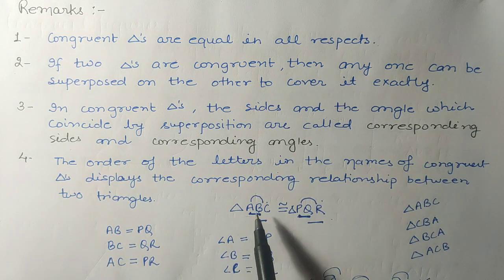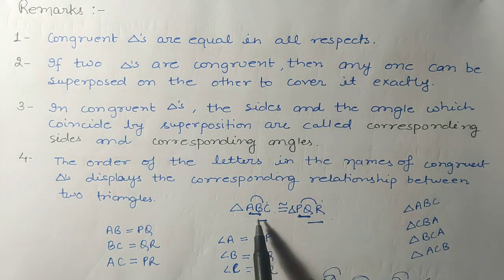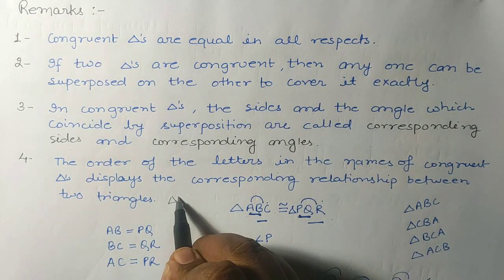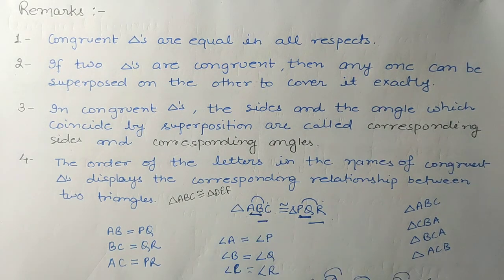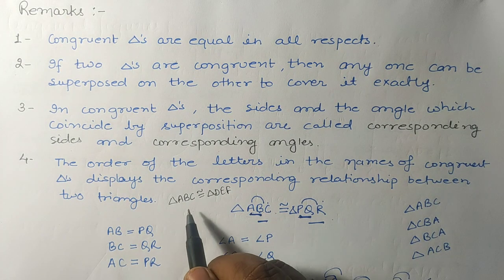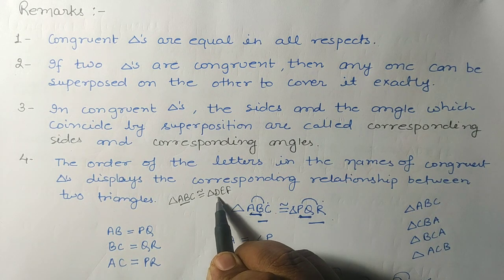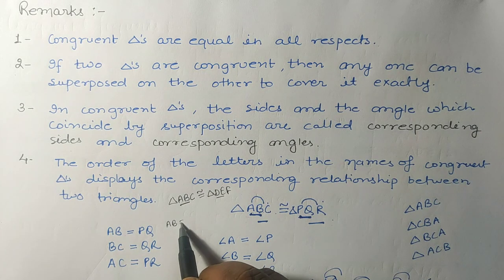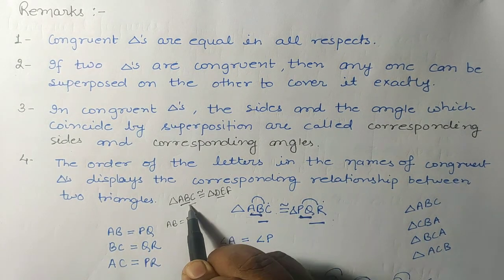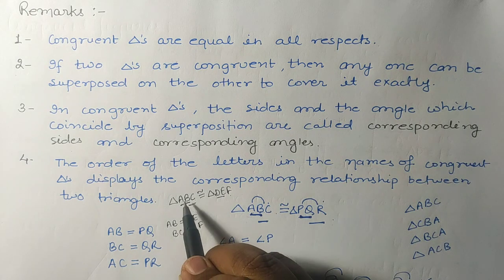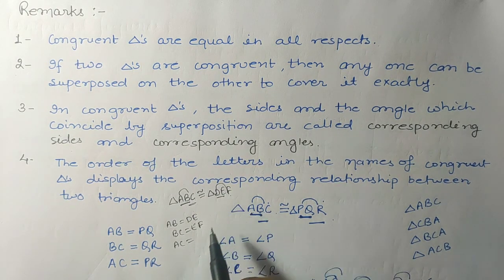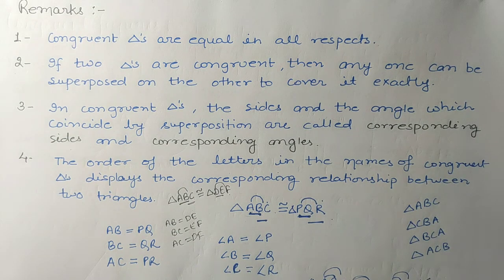In congruent triangles, the sides and angles that coincide by superposition are called corresponding sides and corresponding angles. The order of the letters is very important. If triangle ABC is congruent to triangle DEF, then AB equals DE, BC equals EF, and AC equals DF — the order of the name tells us which part is equal to which part.